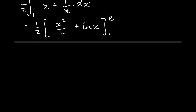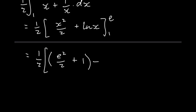Continuing, we have to distribute the e. So we have e² over 2 plus the natural log of e — and the natural log of e is just 1, so plus 1. Then minus, we distribute the 1: 1 squared over 2 is 1 over 2, and plus the natural log of 1, which is just 0.